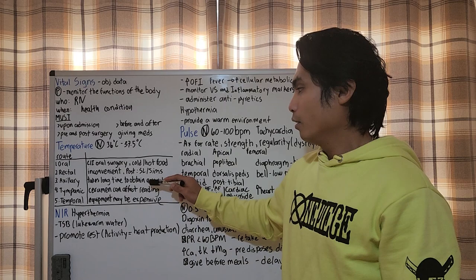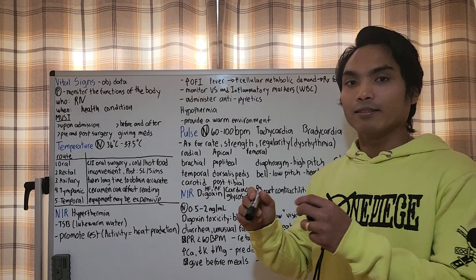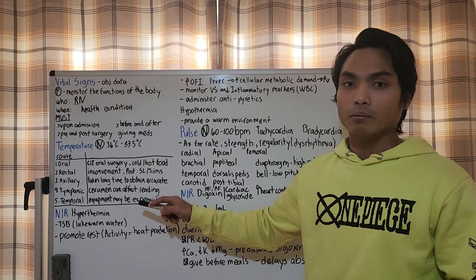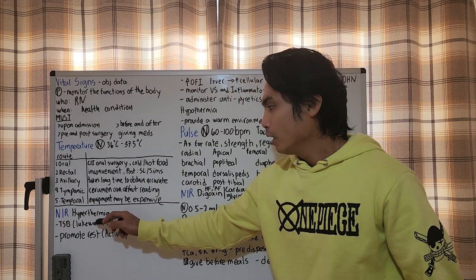The tympanic and temporal are your fastest routes of temperature, although in tympanic, cerumen can affect the reading, and in temporal, the equipment may be expensive.